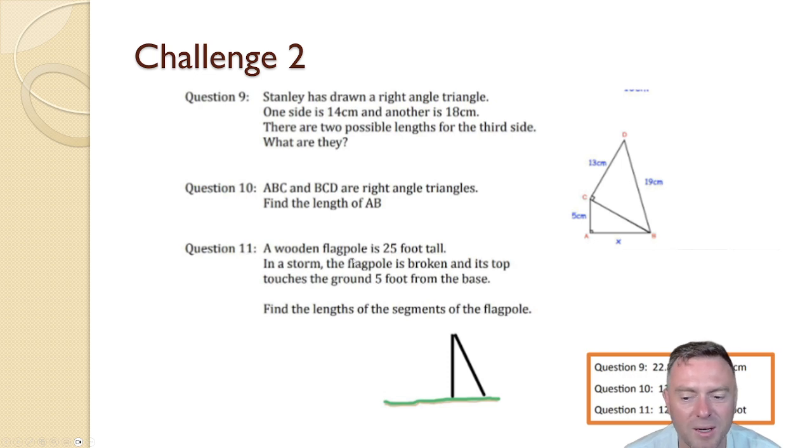The last one, number 11: A wooden flagpole is 25 foot tall. In a storm the flagpole is broken and its top touches the ground five foot from the base. Find the lengths of the segments of the flagpole. So the whole flag is 25 foot and then it's been broken in the storm. So the top touches the ground five feet from the base. So it's five feet across here and you're left with this measurement here and here.